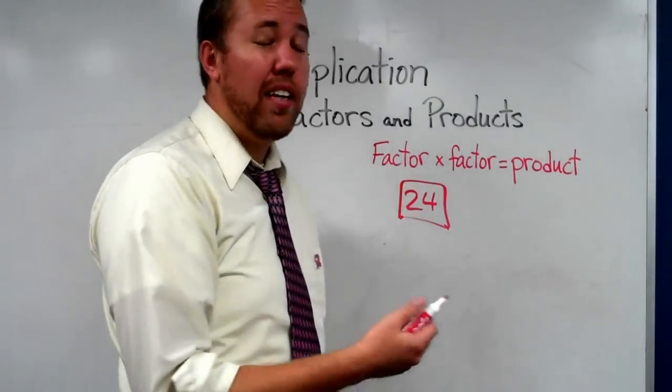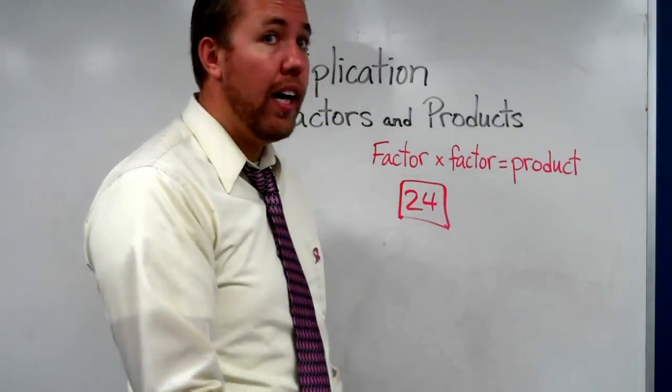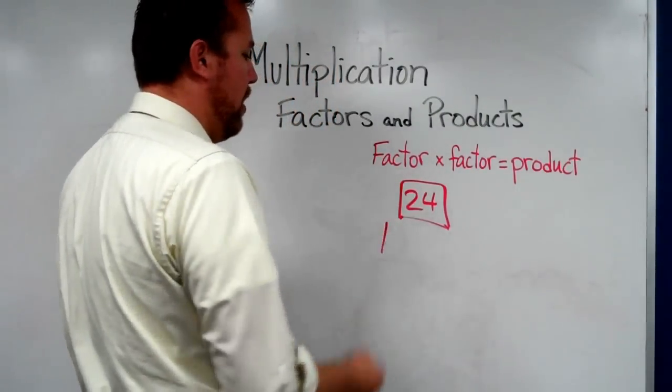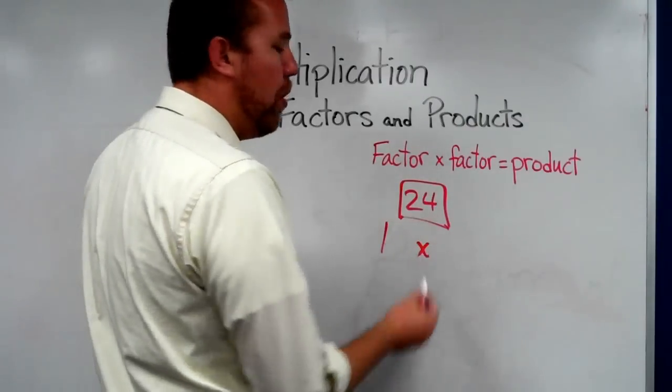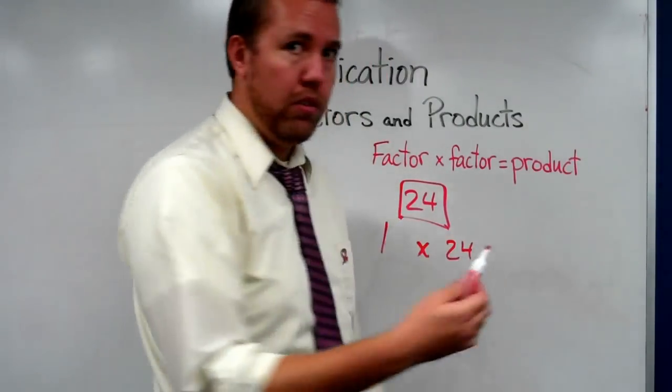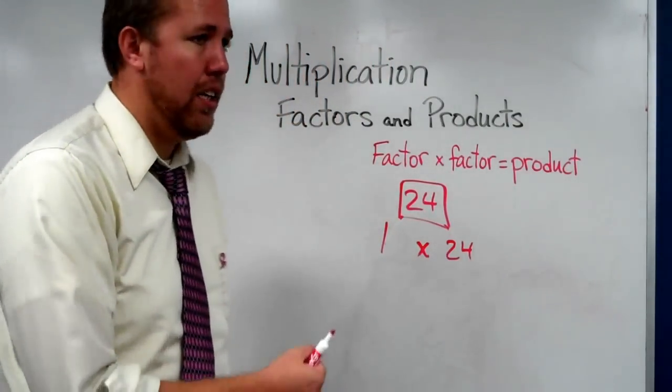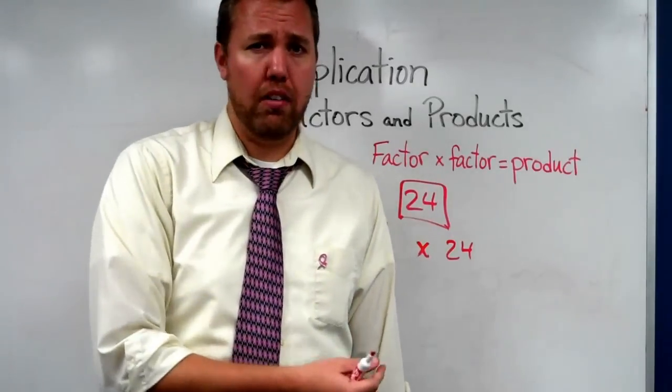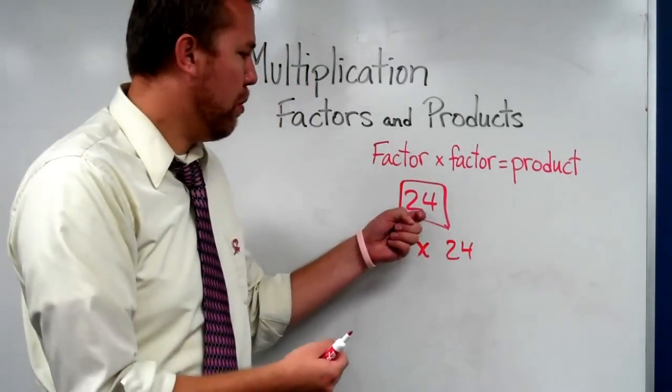So 1 times what equals 24? Well, 24, of course. Any number times 1 equals itself. And then 24.